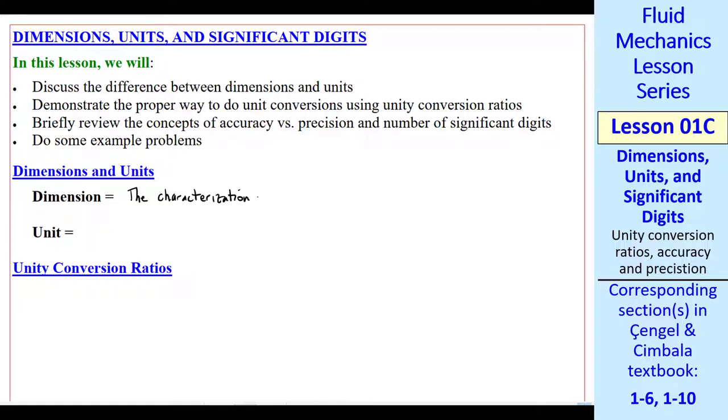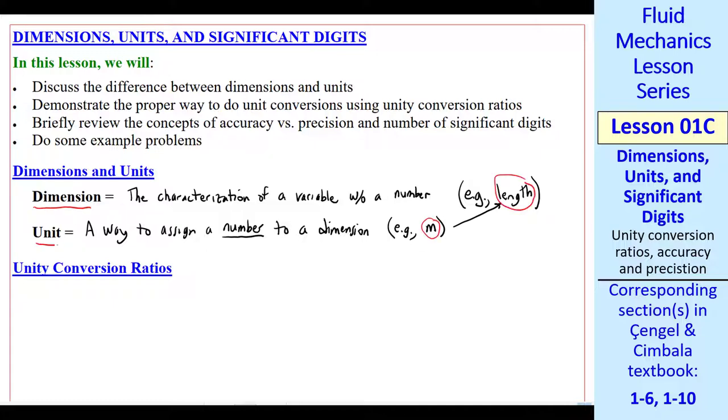What is a dimension? It's the characterization of a variable without a number associated with it. For example, length is a dimension. What is a unit? It's a way to assign a number to a dimension. For example, meter. Meter is a unit of the dimension length. Don't confuse dimensions and units.